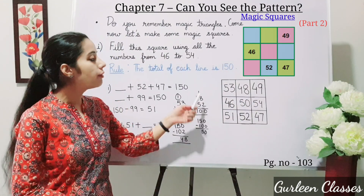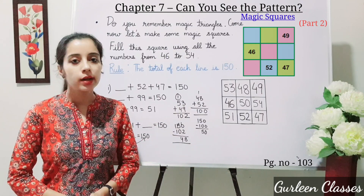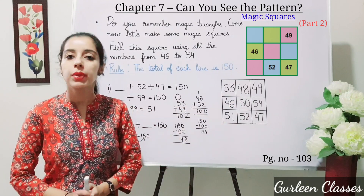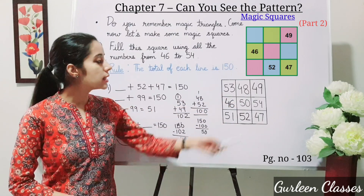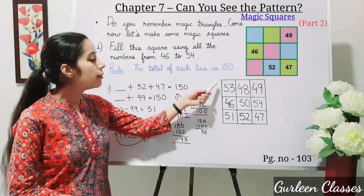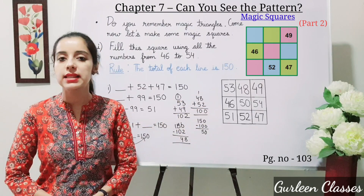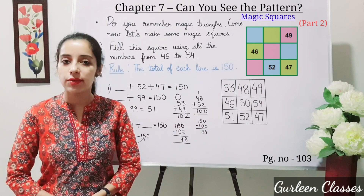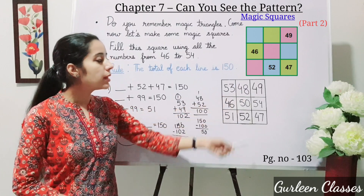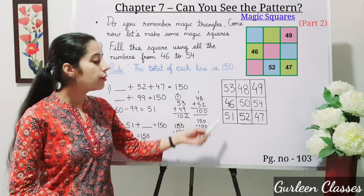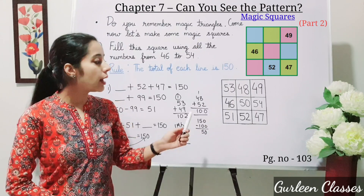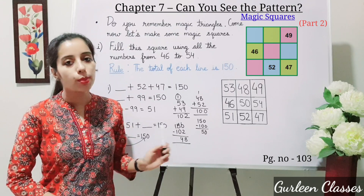Now let us check our magic square. The total of each line is 150. Checking column-wise: 53 plus 48 is 101, plus 49 is 150. Checking row-wise: 53 plus 46 is 99, plus 51 is 150. The magic square is confirmed at 150. Students, write this answer in your book.